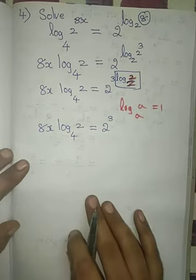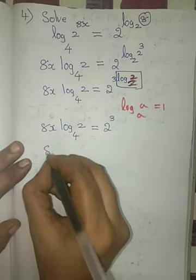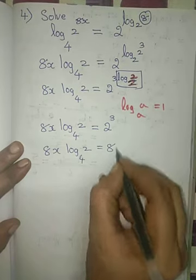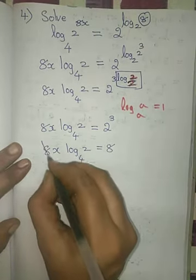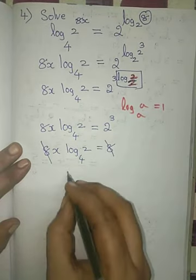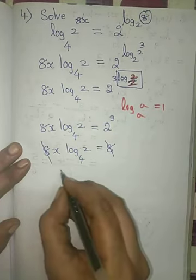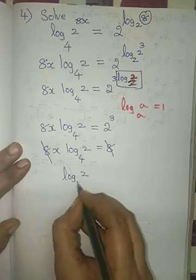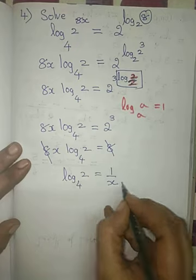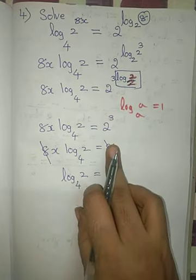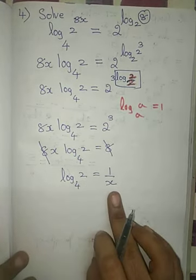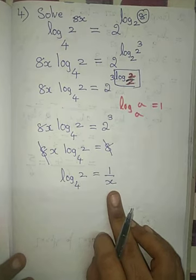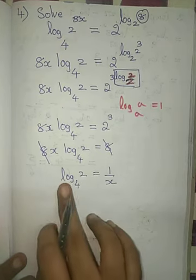Next step: 8x log 2 to the base 4 equals 8. I can cancel the 8 here and the 8 here. So now you have log 2 to the base 4 equals 1 by x, bringing x to the other side.